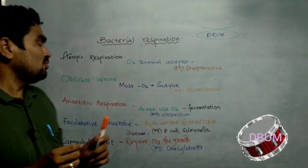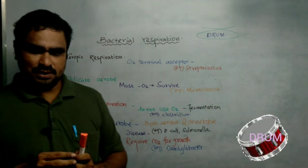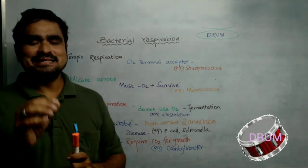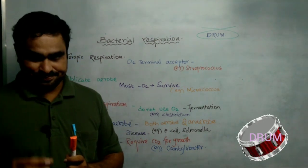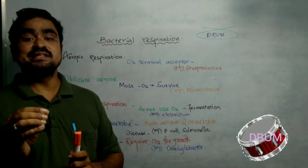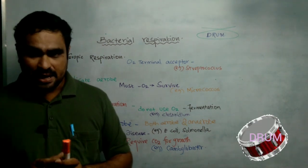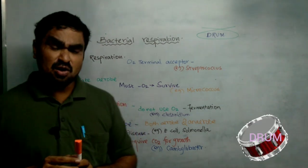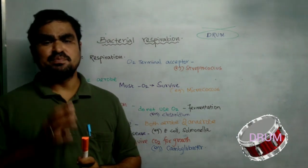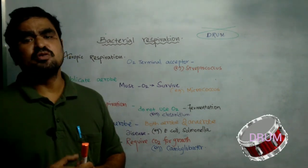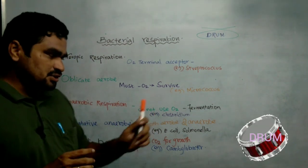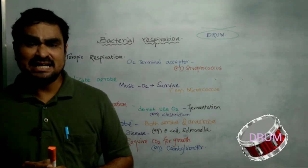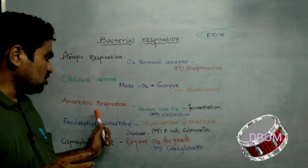The third one is anaerobic respiration. Anaerobic respiration means the bacteria do not utilize oxygen for their growth. In this type of respiration, most of the fermentation processes take place. An example of anaerobic respiration is Clostridium, a bacterium that performs anaerobic respiration.